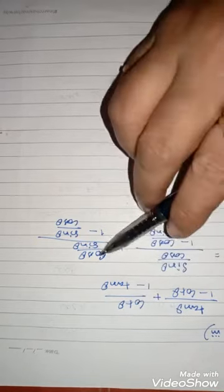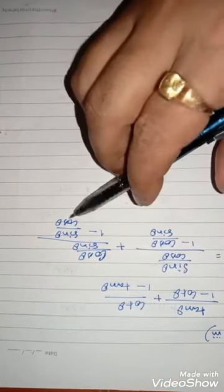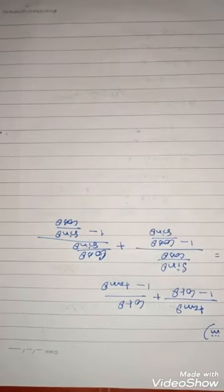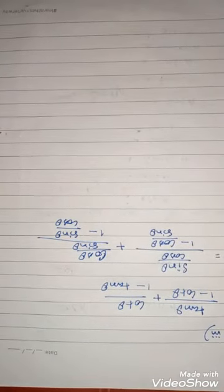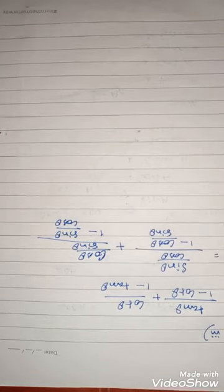So, you can see I have written tan θ as sine by cos, then cot θ as cos by sine, here cot θ as cos by sine, and here tan θ as sine by cos. Now we simplify the denominator part.